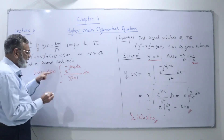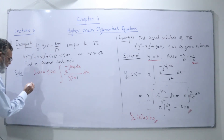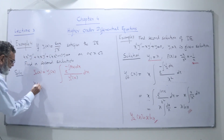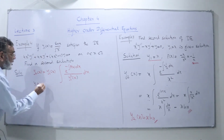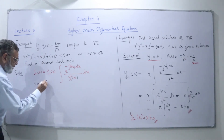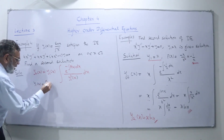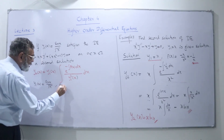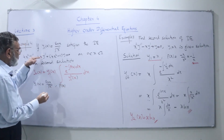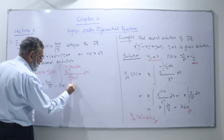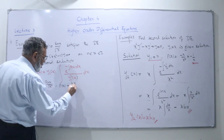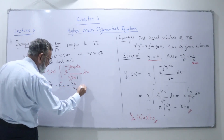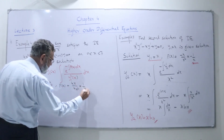Now we need to find y1(x) and p(x). y1(x) is given to us: y1(x) = sin(x) over root of x. For p(x), we take a1(x) over a2(x), which is 4x over 4x squared, and we solve it to get 1 upon x.